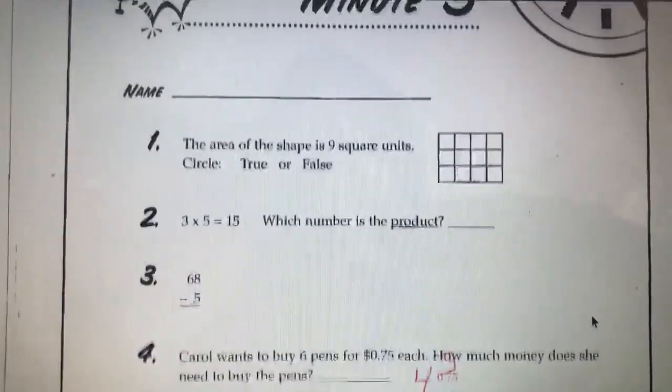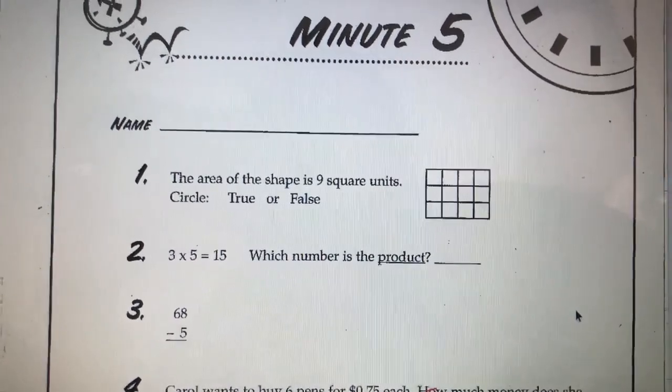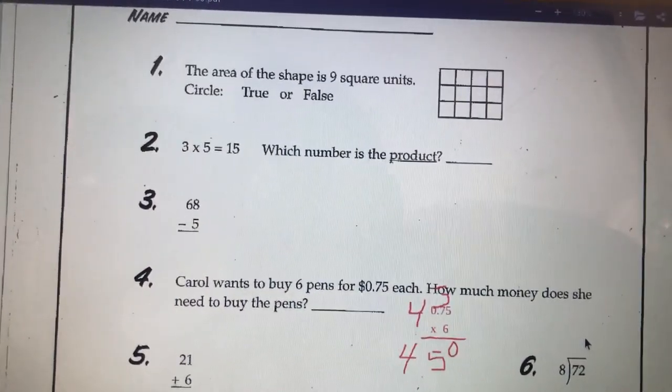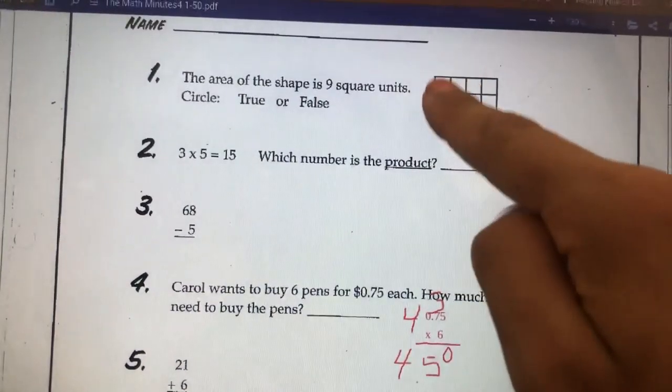Hey guys, it's Mrs. Antones giving you some answers from minute 5. Number 1 says the area of the shape is 9 square units. True or false? Well, a square unit is just one of these little squares.